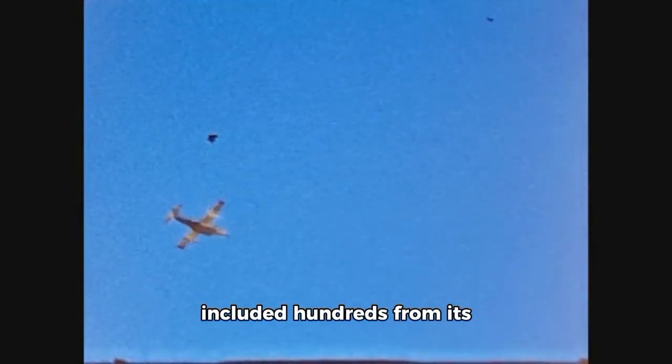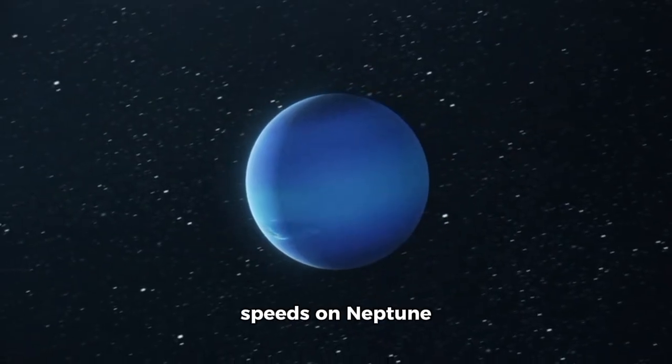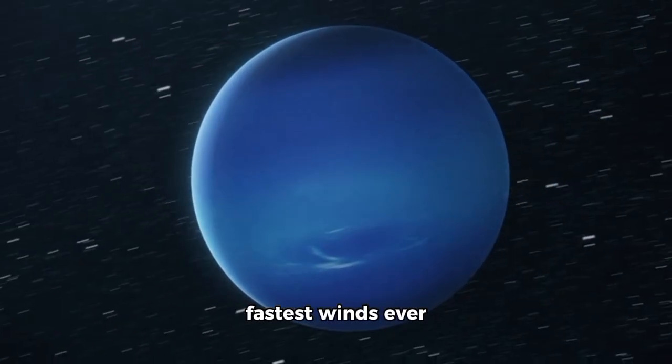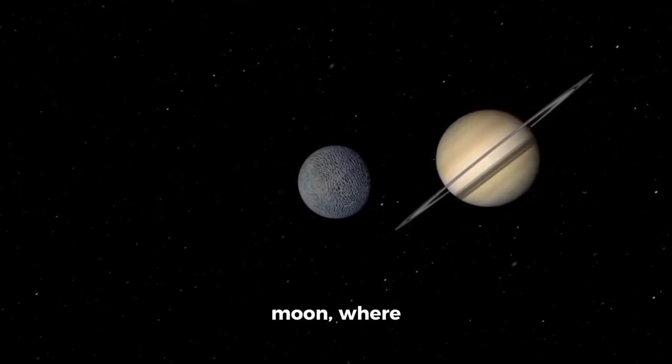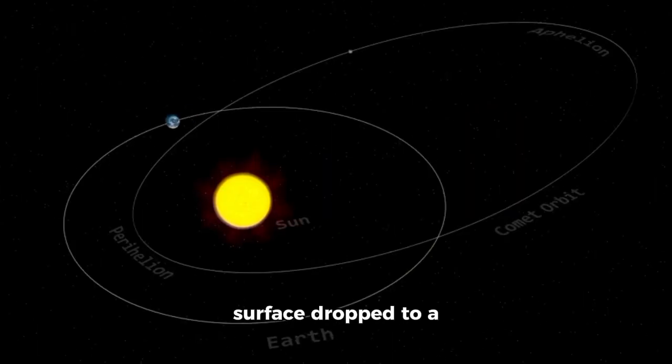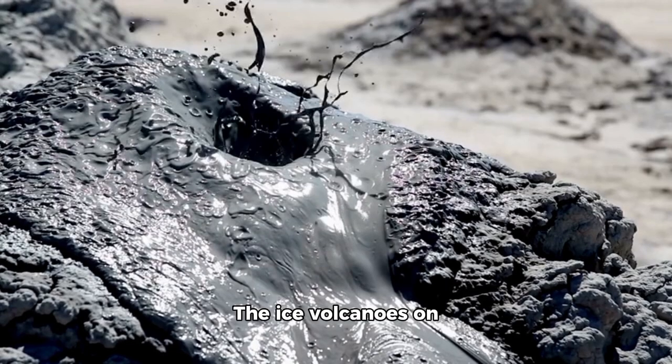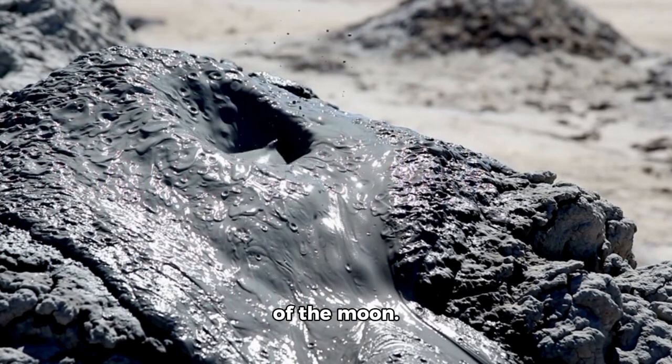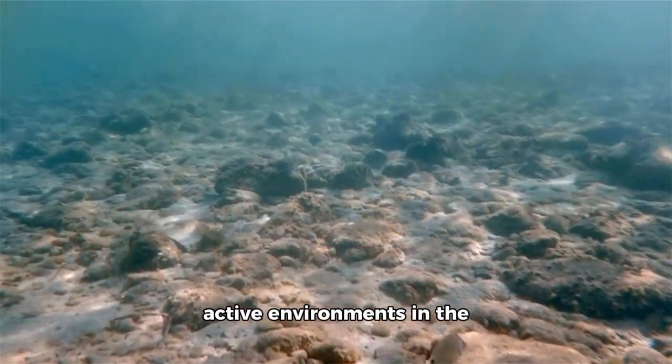Voyager 2 also had some cool achievements during its mission. It found wind speeds on Neptune that went over 2,100 kilometers per hour, about 1,300 meters per second, the fastest winds ever recorded in the solar system. It also saw Triton, Neptune's largest moon, where temperatures at its surface dropped to a super-cold minus 391 degrees Fahrenheit, making it one of the solar system's coldest regions. The ice volcanoes on Triton released nitrogen gas and froze chunks up to 5 kilometers high.